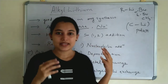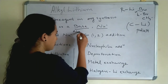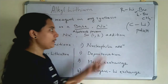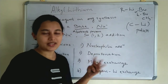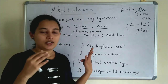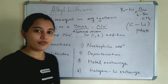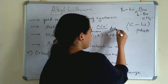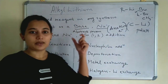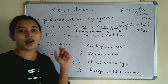When Alkylithium is acting as a base, it means it can abstract a proton — that is deprotonation. When it is acting as a nucleophile, it means it can undergo nucleophilic addition reactions. A nucleophile can donate a pair of electrons. So Alkylithium is both a base and a nucleophile, and it is a hard nucleophile.